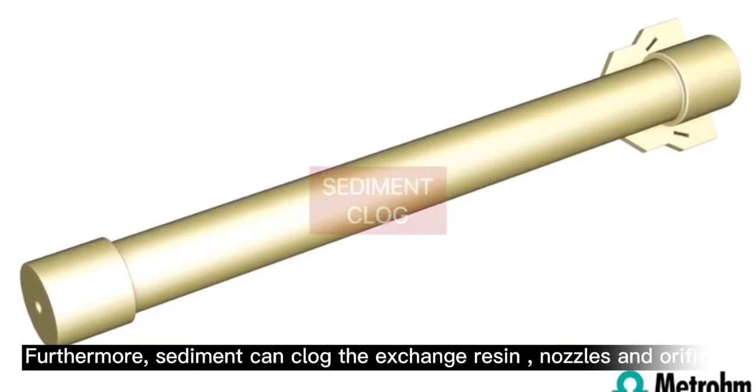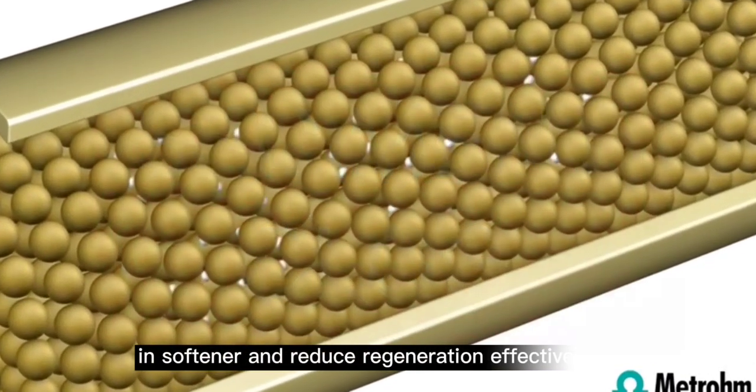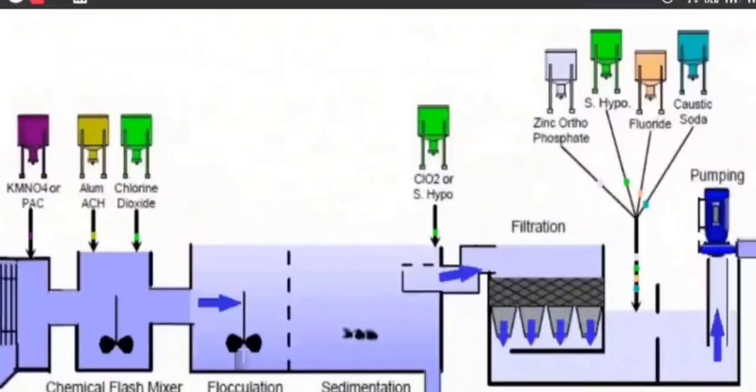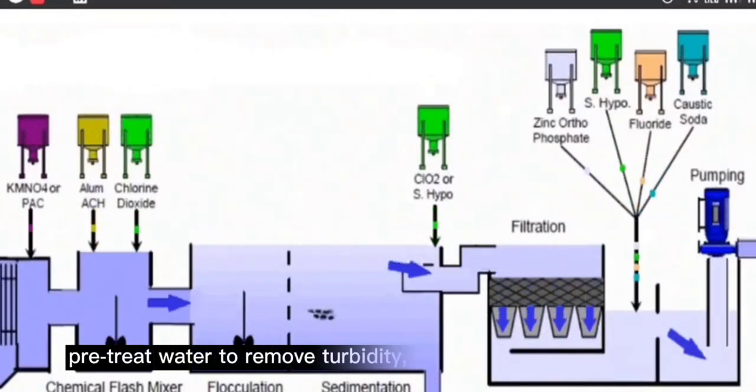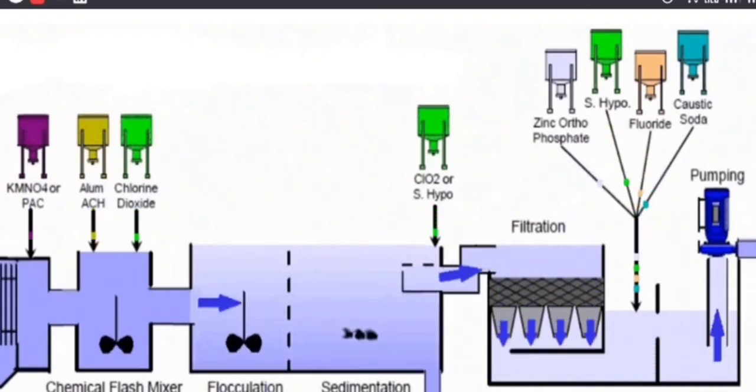Furthermore, sediment can clog the exchange resins, nozzles, and orifices in softeners and reduce regeneration effectiveness. To prevent sediment build-up, pre-treat water to remove sediment or particles of iron, manganese, or sulfur.